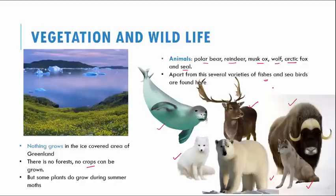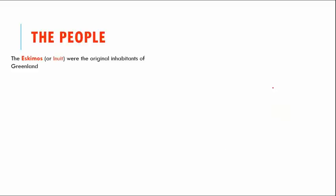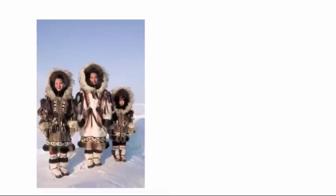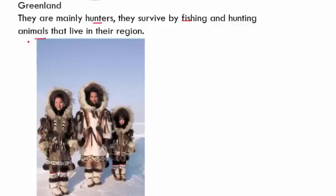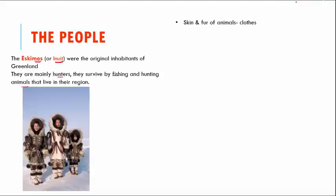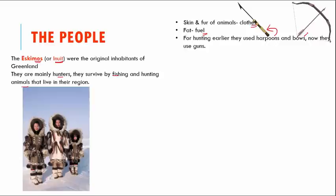The Eskimos, or the Inuits, are the original inhabitants of Greenland. They call themselves Inuits, but we call them Eskimos. These people are mainly hunters and they survive by fishing or hunting animals like polar bear and fox. They use the skin and fur of animals to make their clothes, and they use the fat from animals as fuel. For hunting, they used to use harpoons and bows, but now they have switched over to guns.